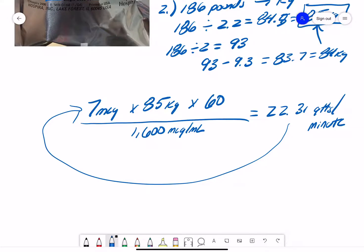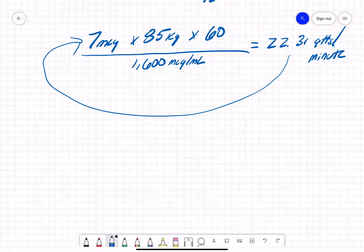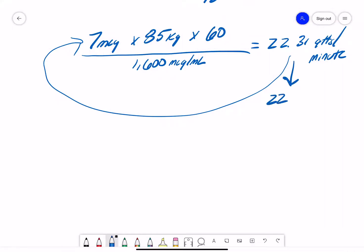22.31 drops per minute will achieve my 7 micrograms per kilo per minute dosing that I was originally ordered from the doc. Now, we can't give 0.31 of a drop, so we would just take that and round it down to 22 drops a minute.